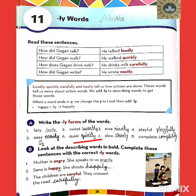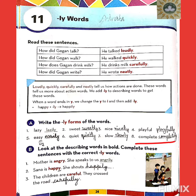Quiet: Q-U-I-E-T — the new word will be quietly: Q-U-I-E-T-L-Y. Slow: S-L-O-W — the new word is slowly: S-L-O-W-L-Y. Complete: C-O-M-P-L-E-T-E — the new LY word is completely: C-O-M-P-L-E-T-E-L-Y.